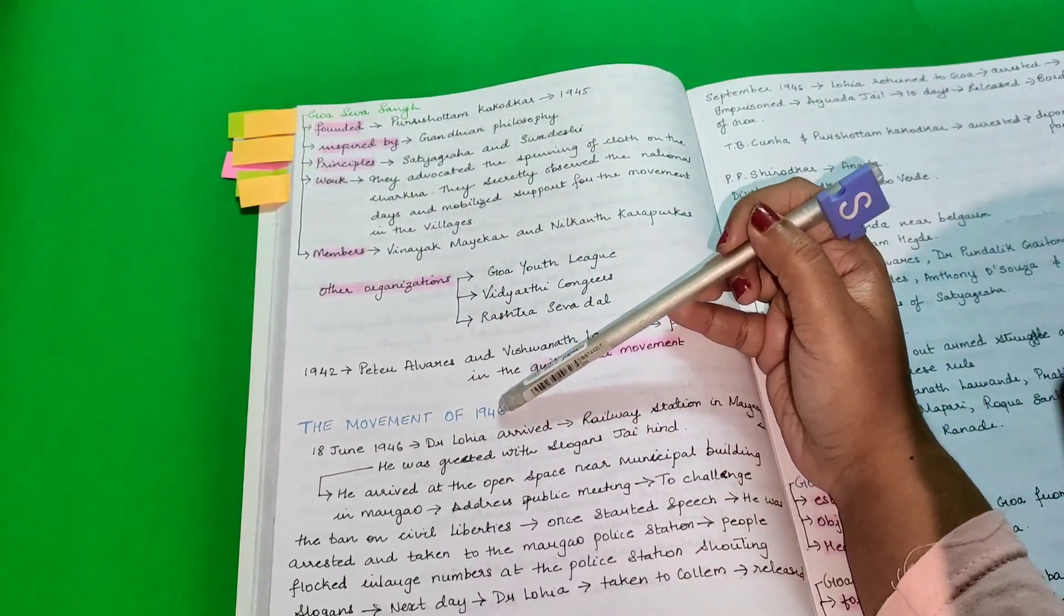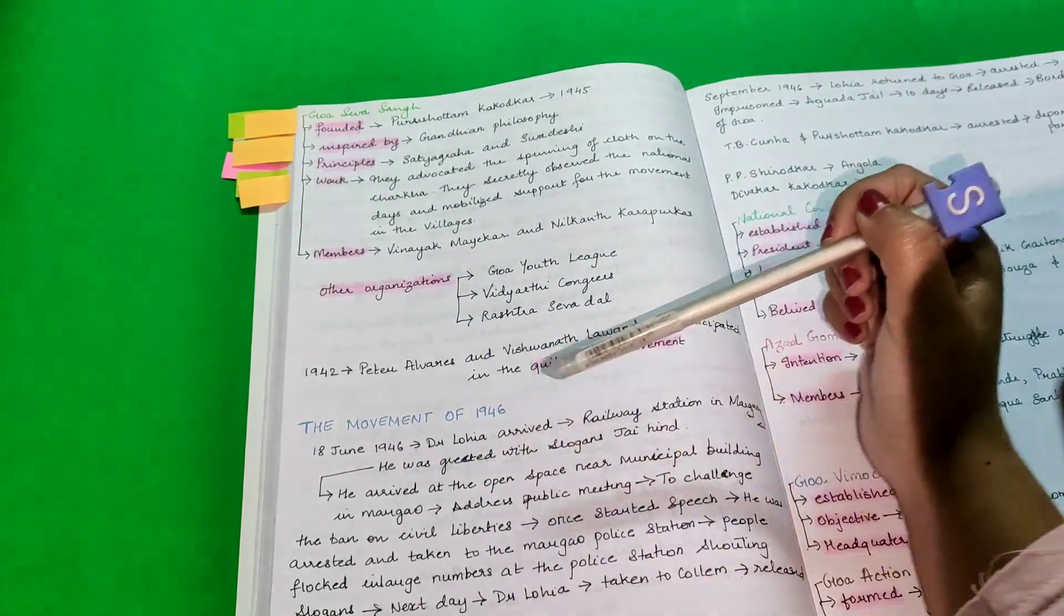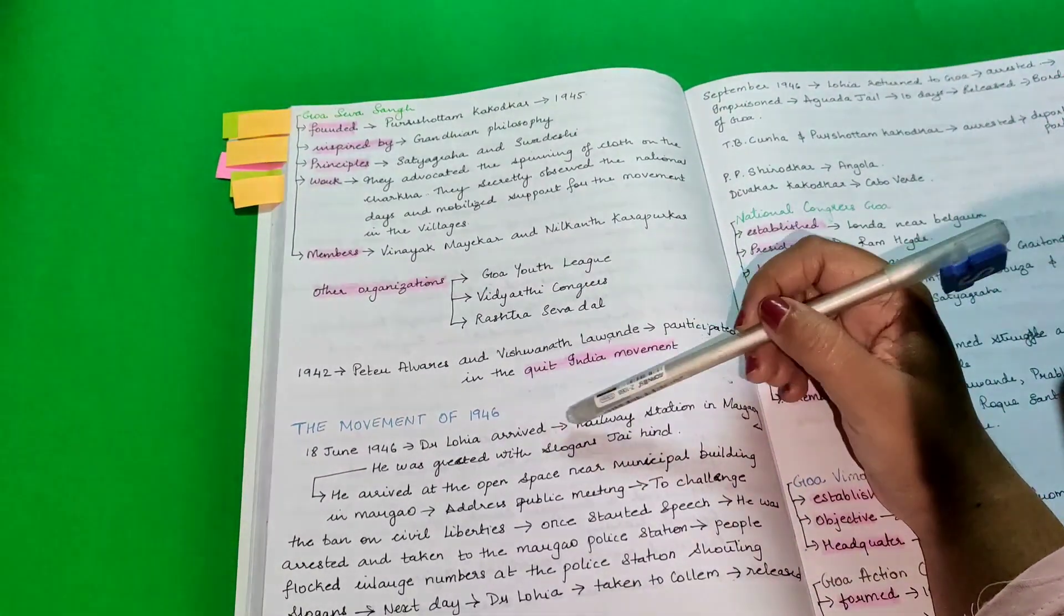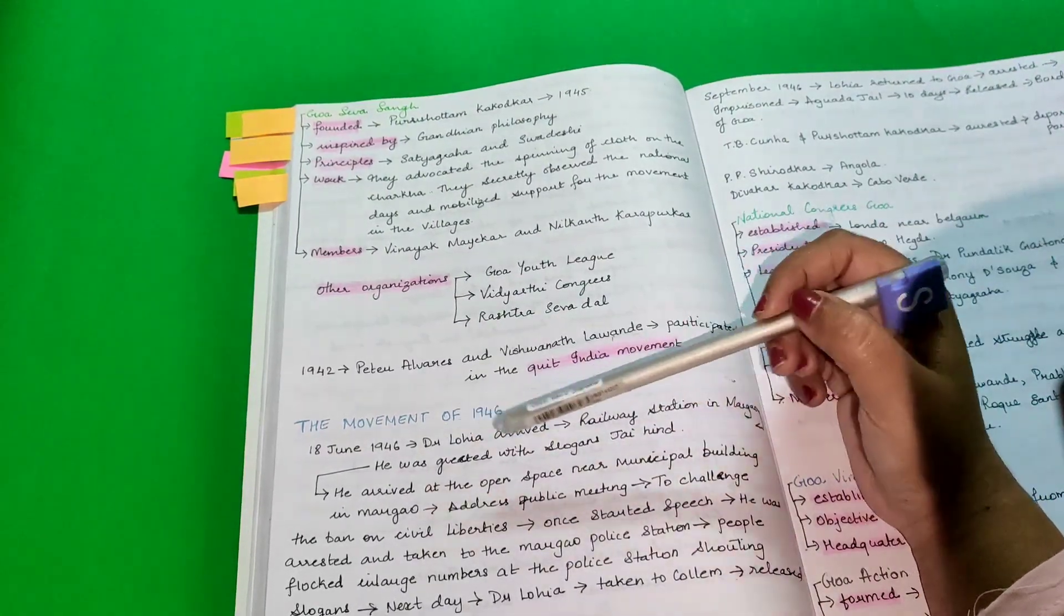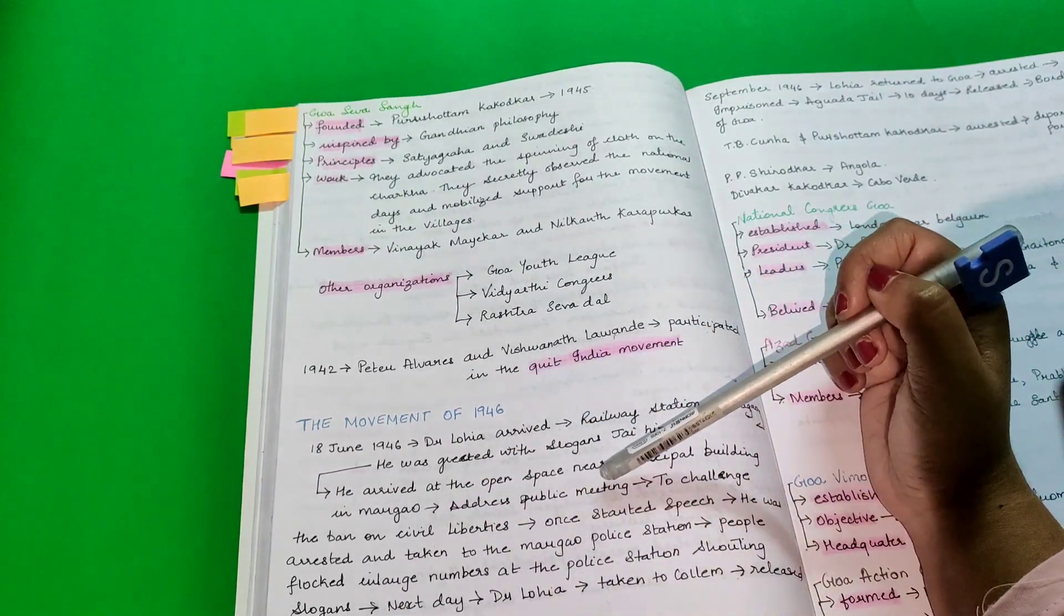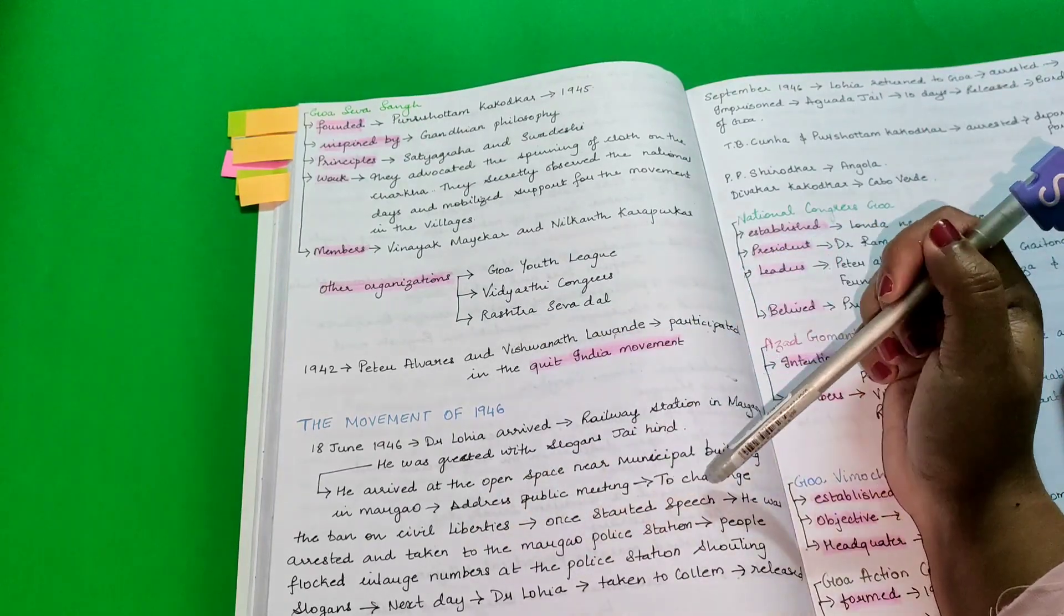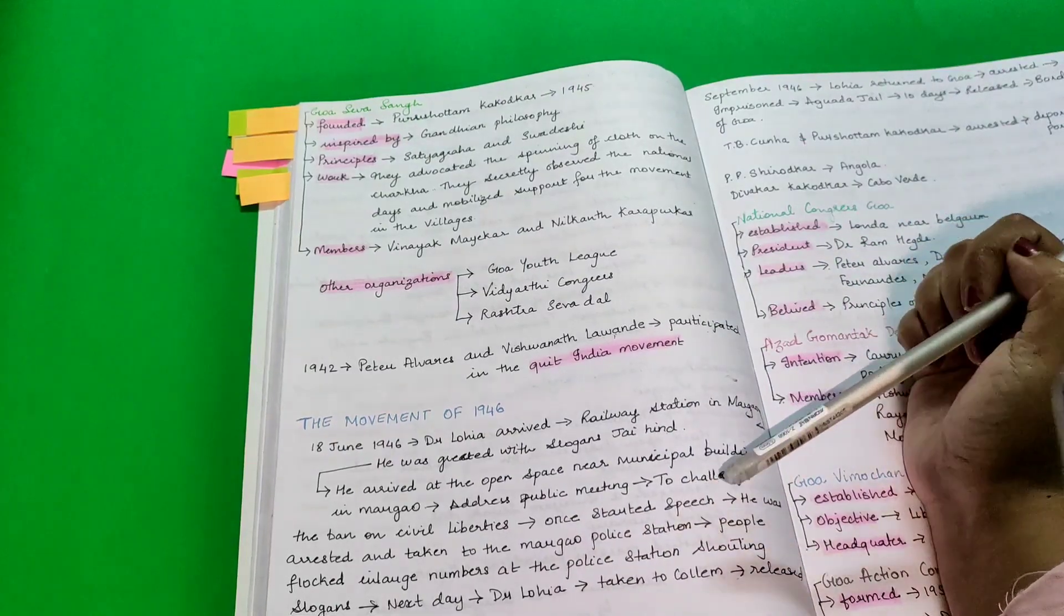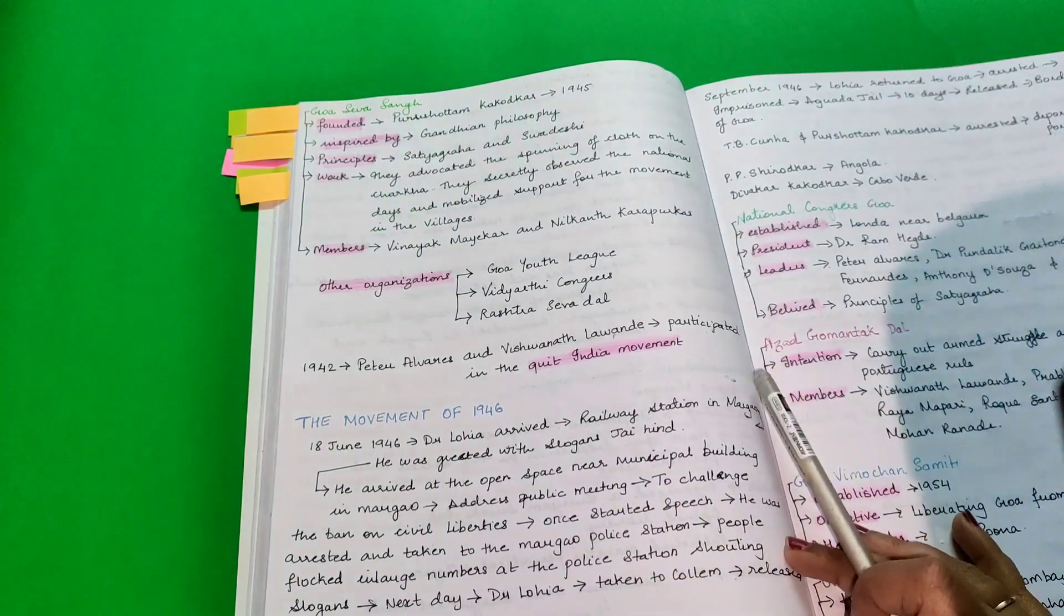The Movement of 1946. On 18 June 1946, Dr. Loya arrived at the railway station at Margaon. He was greeted with slogans like Jai Hind. After that, he arrived at the open space near a municipal building in Margaon and he addressed a public meeting to challenge the ban on civil liberties. Once he started with the speech, he was arrested and taken to the Margaon police station. Then people flocked in large number at the police station shouting slogans.